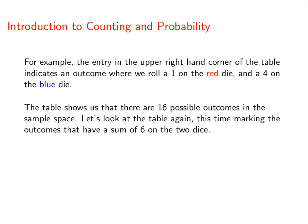Now, let's go back to the table, and this time we're going to mark the outcomes that have a sum of 6. All right, so that's what we've done here. Here, we've put a box around the three outcomes where, if you add up the two dice, you'll get 6.